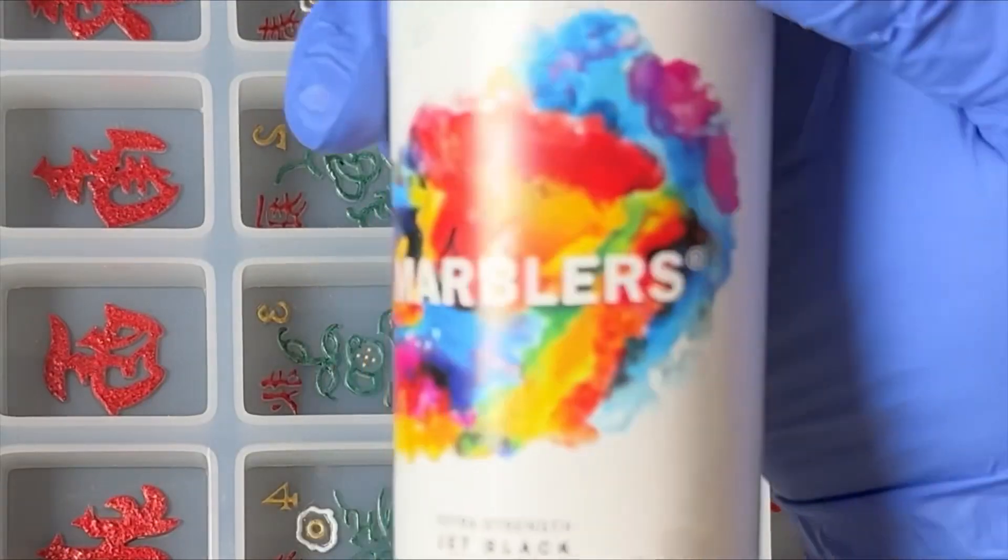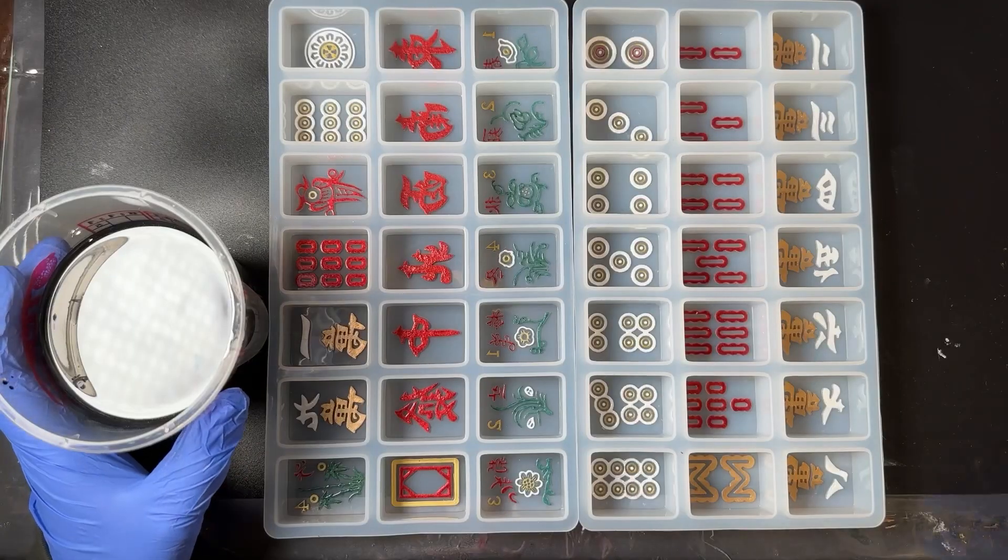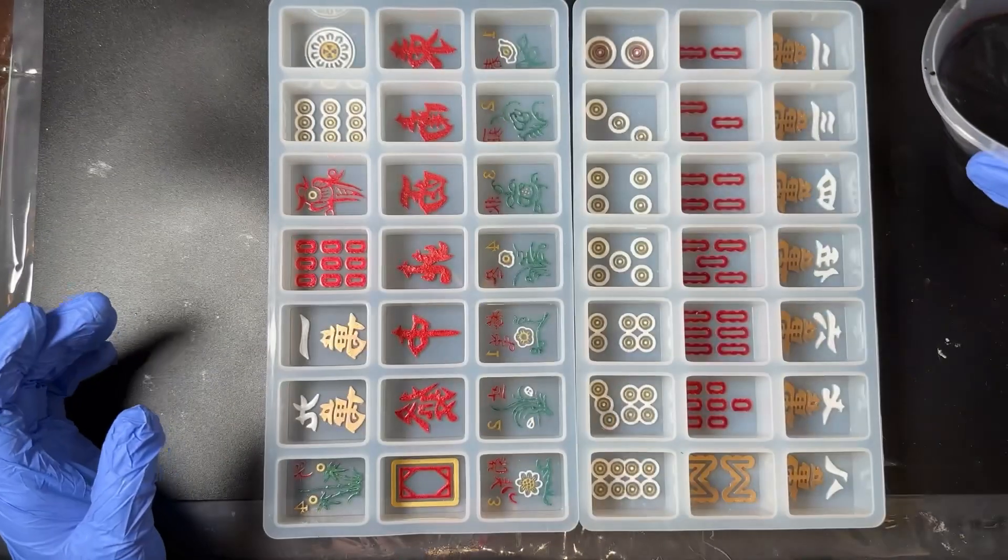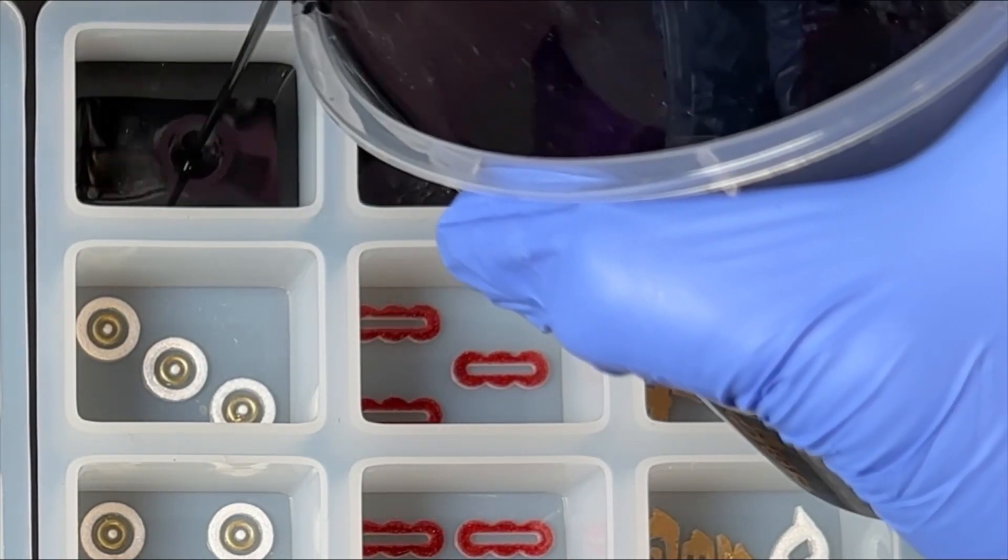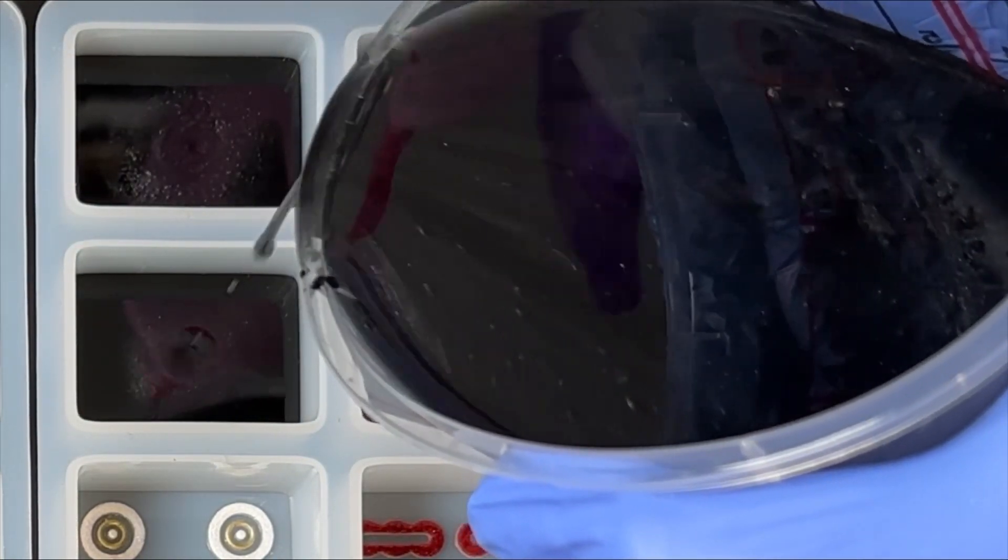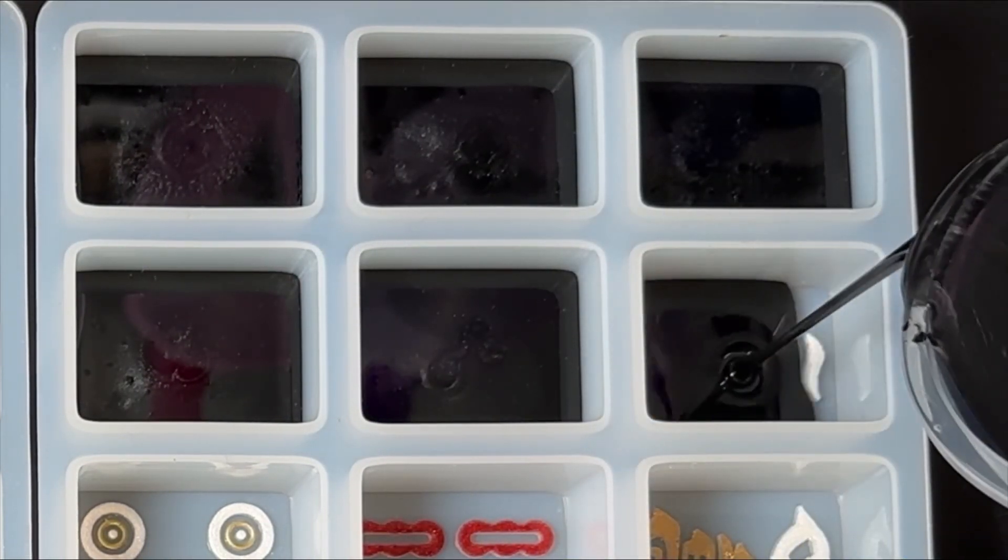Once that was mixed, I then poured that in, again just halfway on the mold. I tried to keep them as even as possible. Once I finished pouring the half of the mold with the black, I did allow that to cure per the manufacturer's instructions.